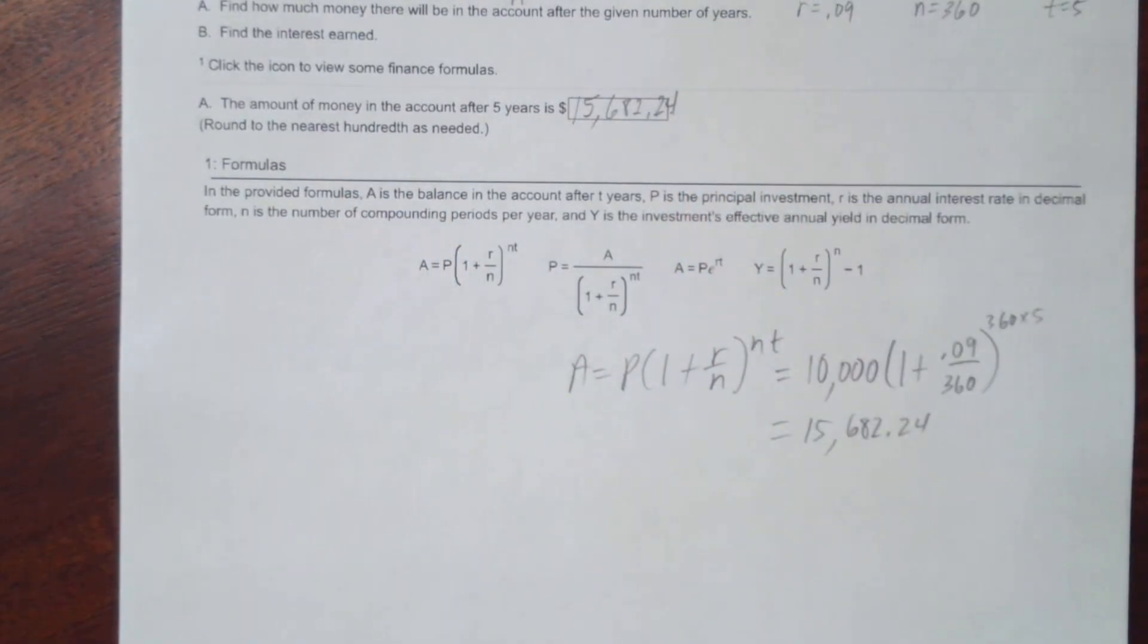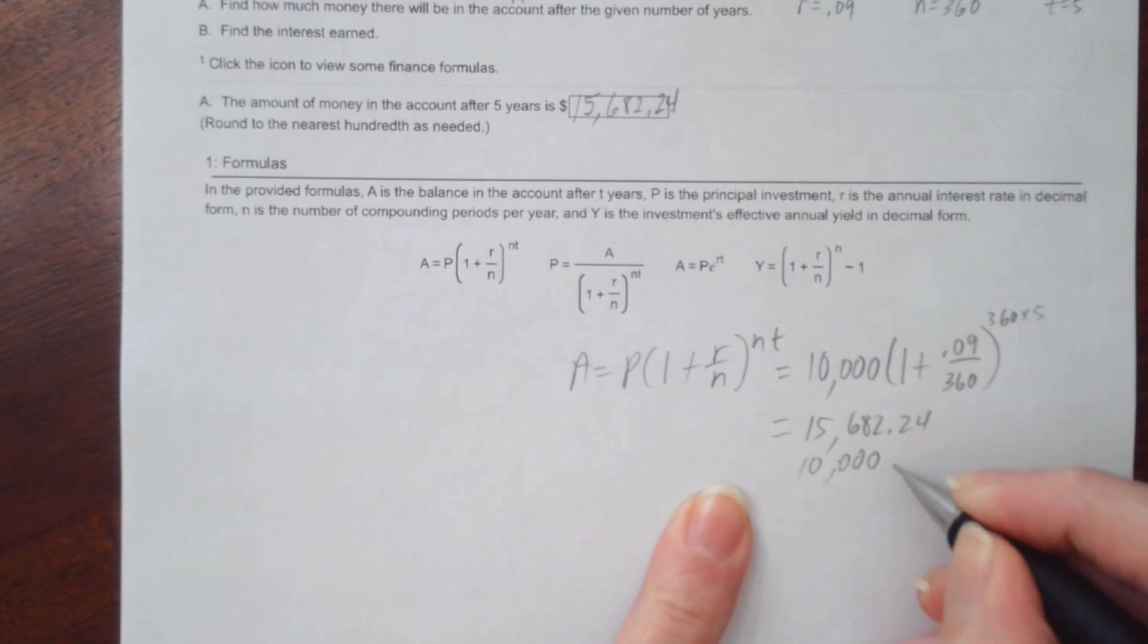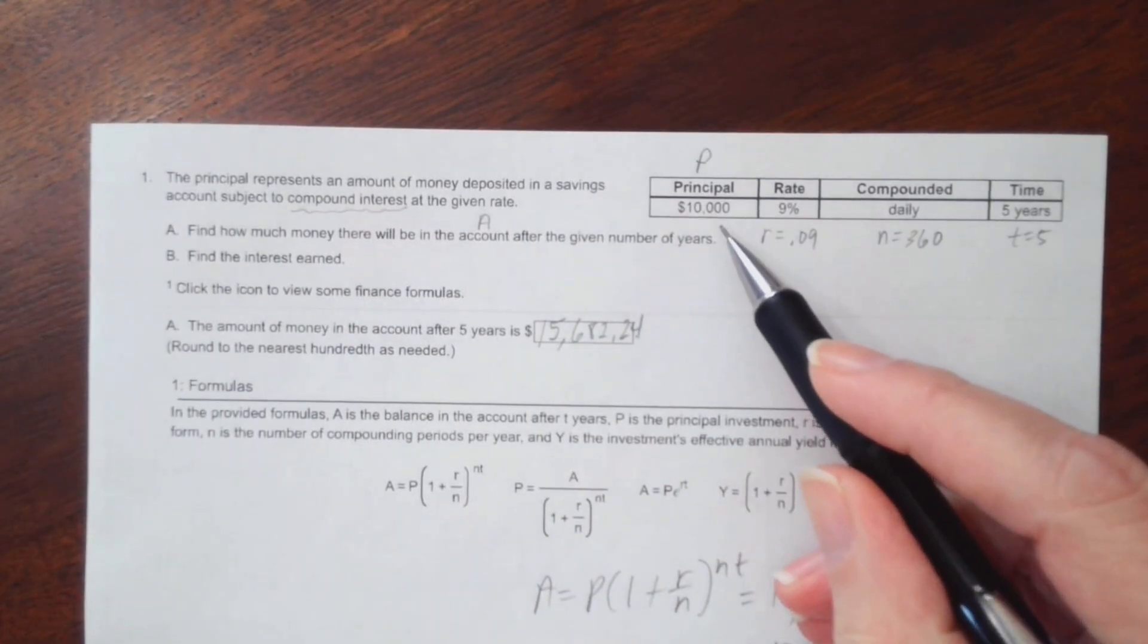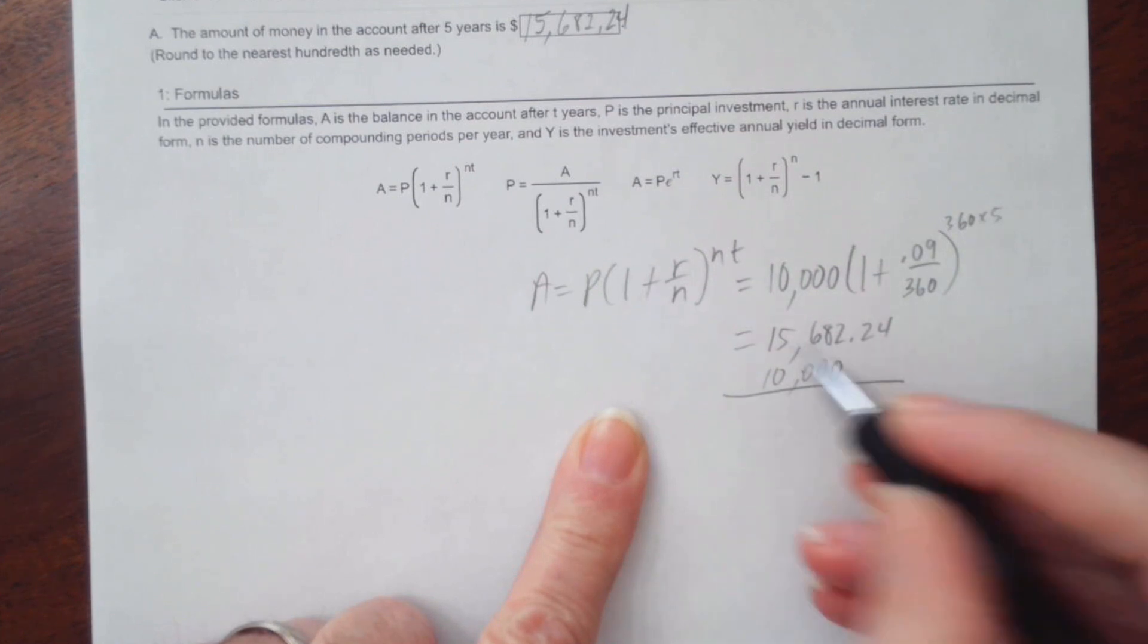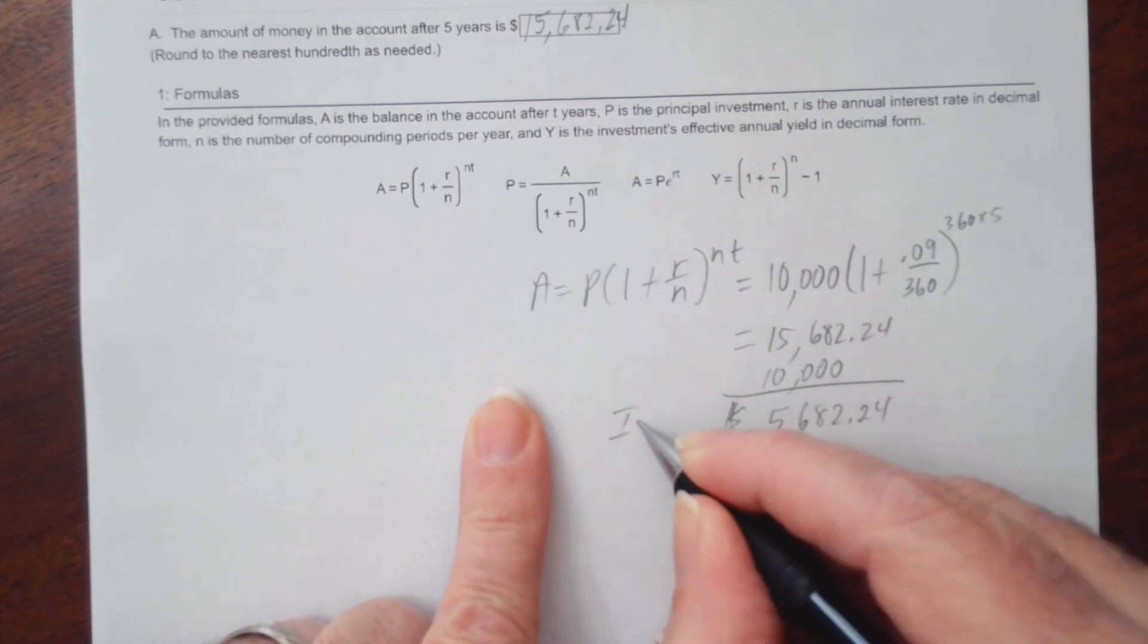And now we need to find the interest that was earned. Well, we put in $10,000. That was the original principal or amount that was deposited into the bank. So if you find the difference, $5,682.24, that's your interest. So this is the interest.